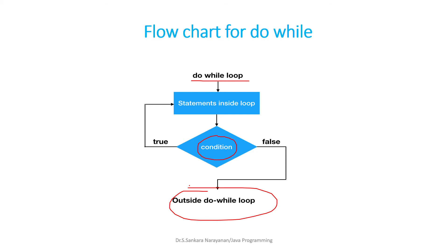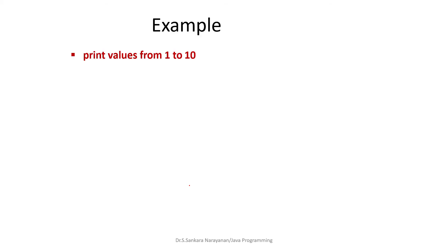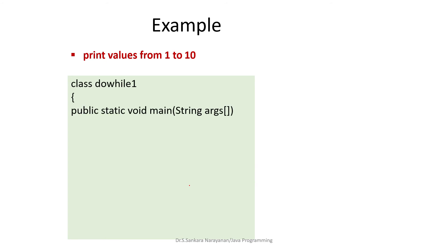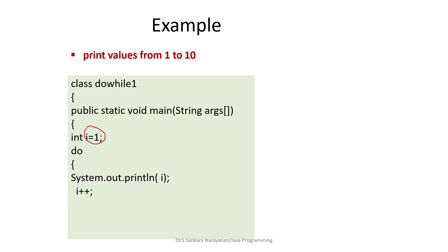Now let me show a simple example program to print values from one to ten. The class name is DoWhileOne, then the main method. Here is the initialization: I'm assigning i the value 1, so i is an integer variable with initial value 1. Then I have 'do', followed by System.out.println to print the value of i. The initial value of i is 1, so 1 will be printed first.